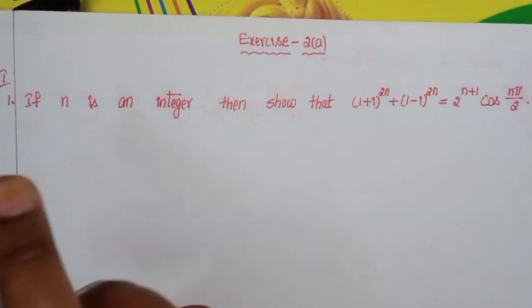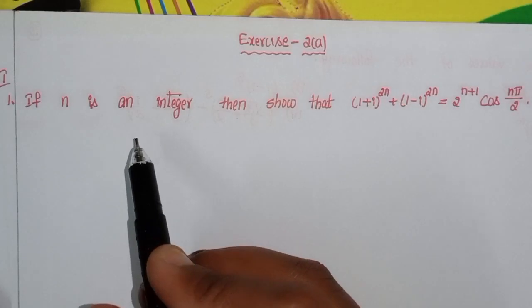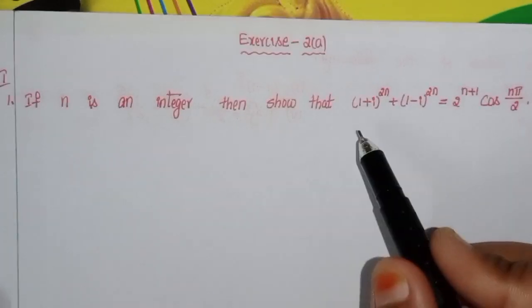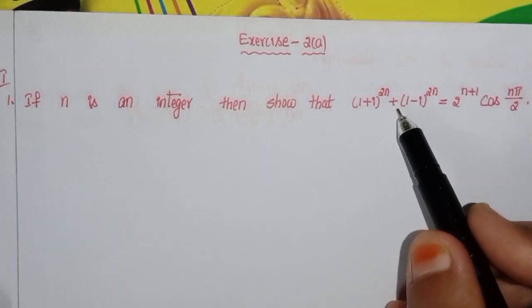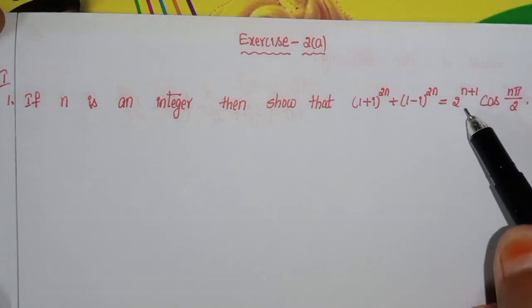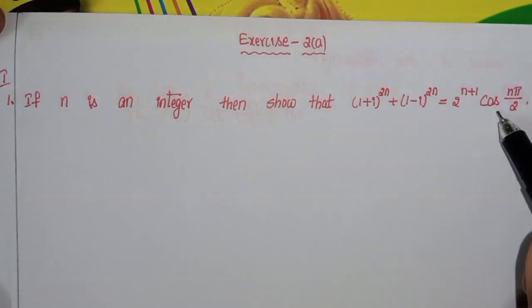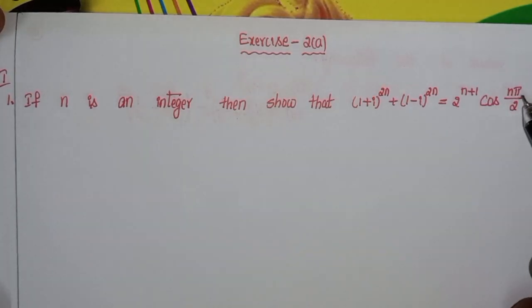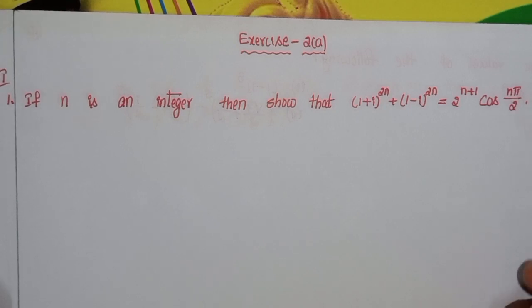For seven marks: if n is an integer, then show that (1+i)^2n + (1-i)^2n = 2^(n+1) · cos(nπ/2).